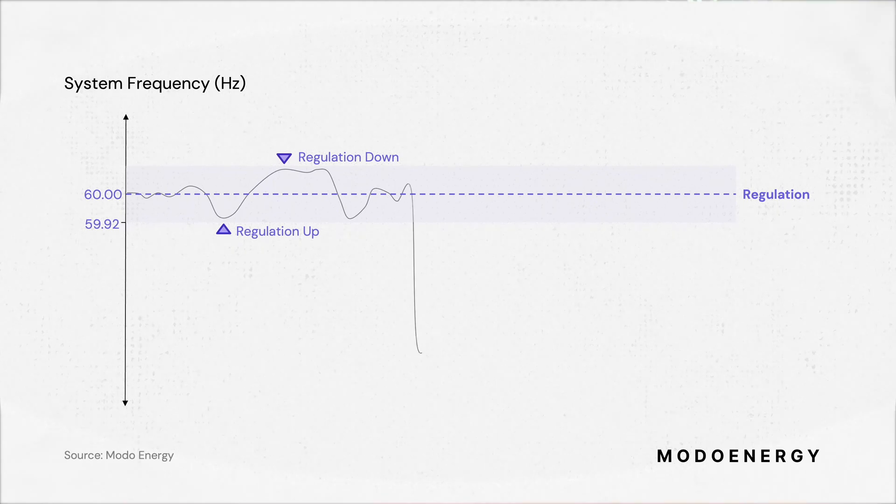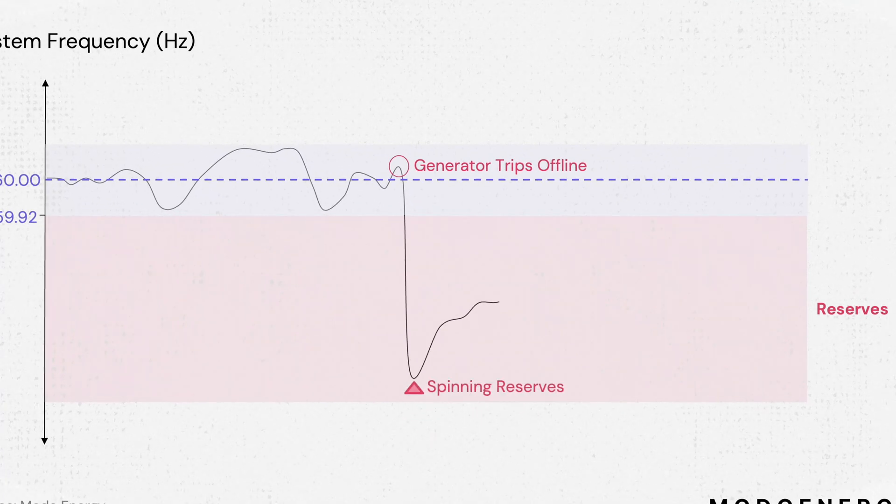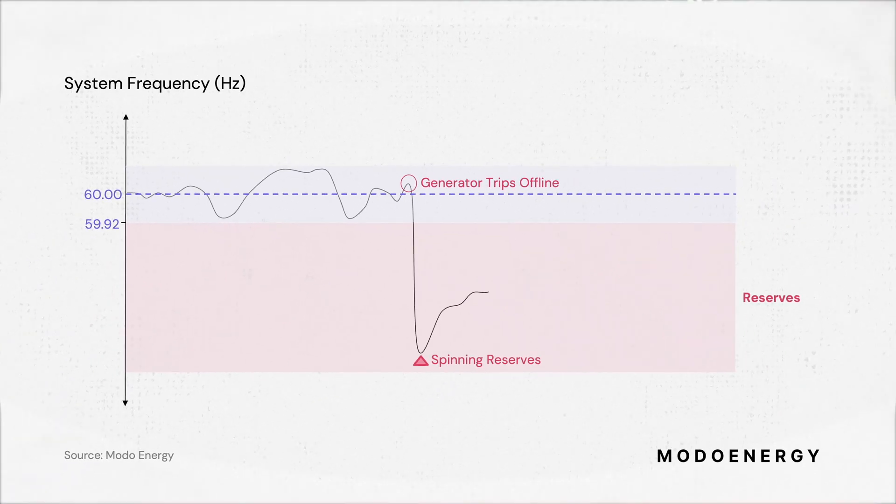Reserve services kick in during emergency conditions that significantly affect system frequency, like when a generator trips offline. The spinning reserve service kicks in first and it comes from resources that are already online or can quickly ramp up, like batteries. They turn up their output to stop frequency from falling any further.